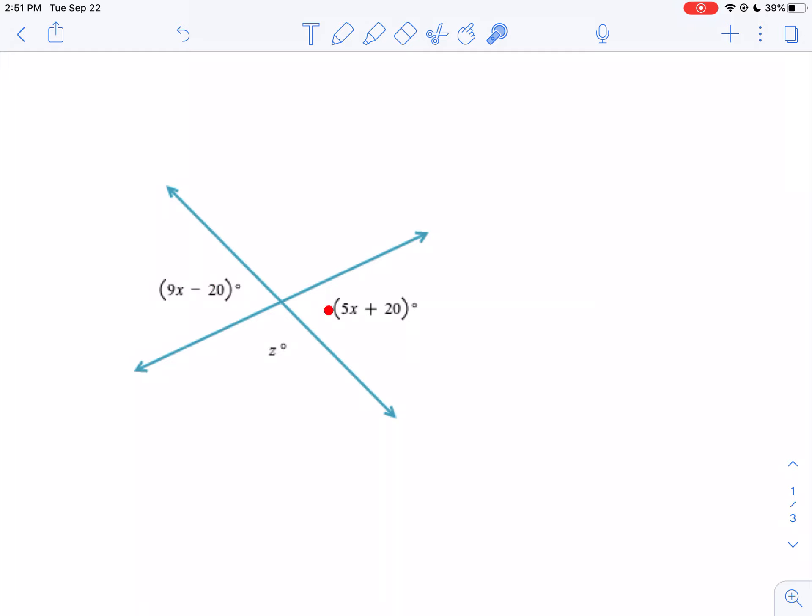When two lines intersect, the angles formed that are across from each other are called vertical angles. They're congruent. That is, this angle and this angle are congruent. That's how you can find X.